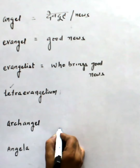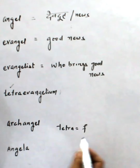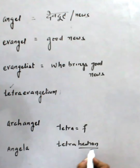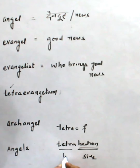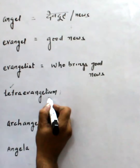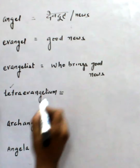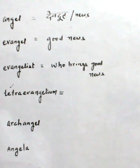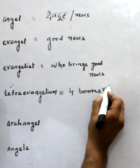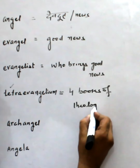Now, Tetra means four. You have a word — Hedron means side, and it also means face. So the one which has four sides, we call it a Tetrahedron. So Tetra Evangelium means four books of theology — the four books of the Jews. Four books of theology about God.